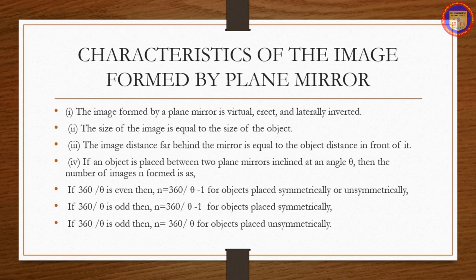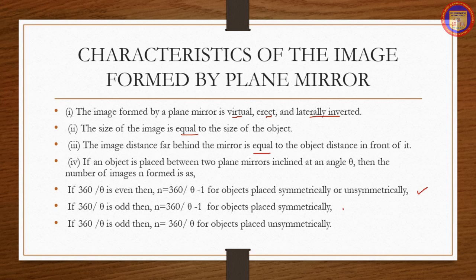Characteristics of the image formed by a plane mirror: the image is virtual, erect, and laterally inverted. The size of the image is equal to the size of the object, and the image distance behind the mirror equals the object distance in front of it. If an object is placed between two plane mirrors inclined at angle theta, the number of images n is: if 360/theta is even, n = (360/theta) − 1 for both symmetric and unsymmetric placement; if 360/theta is odd, n = 360/theta for objects placed unsymmetrically.